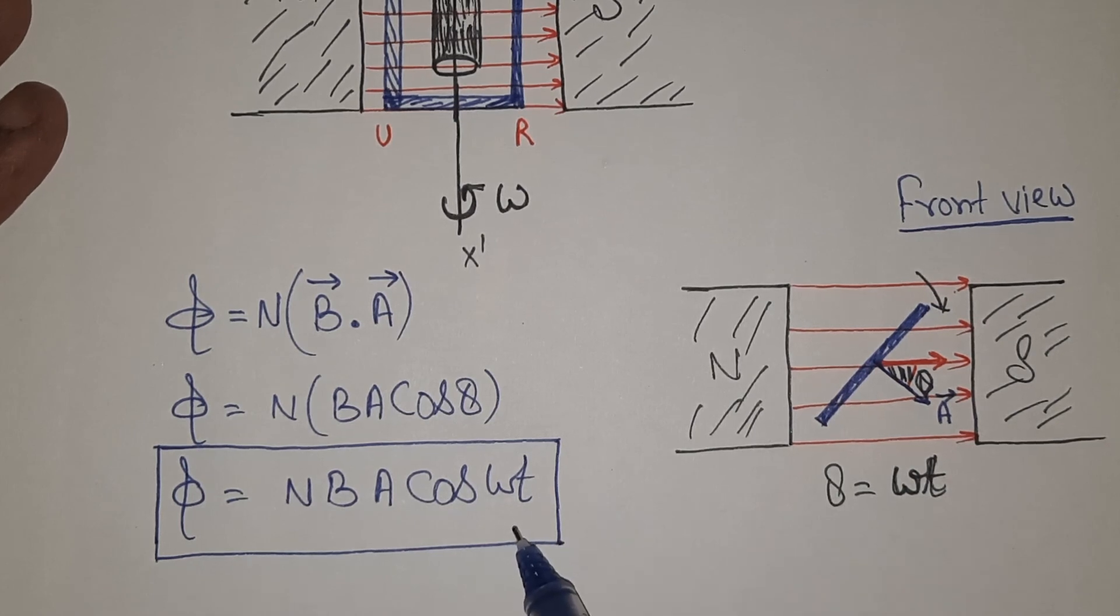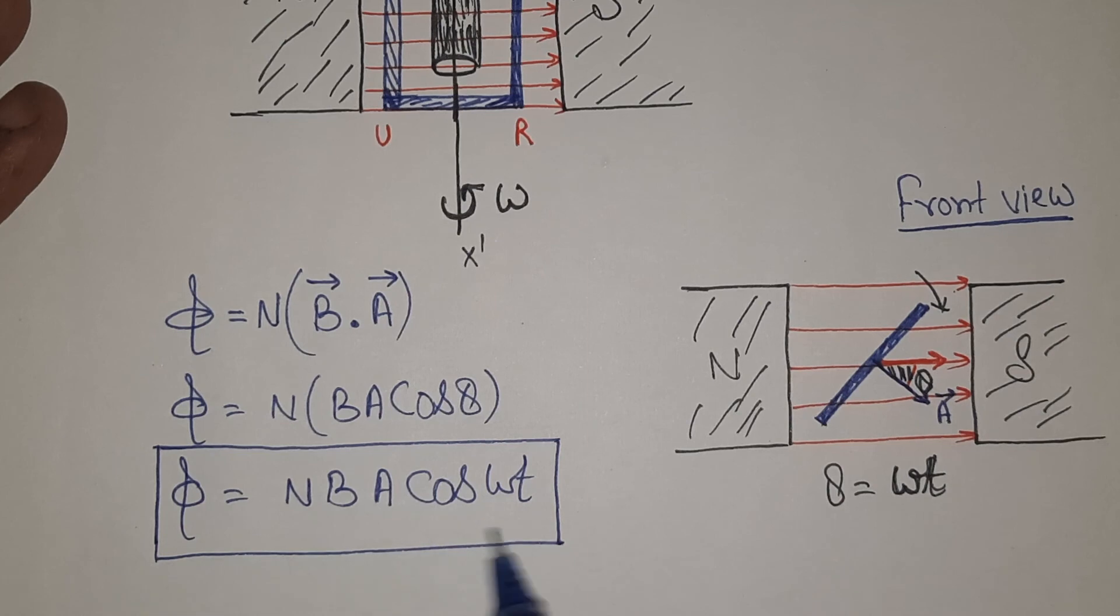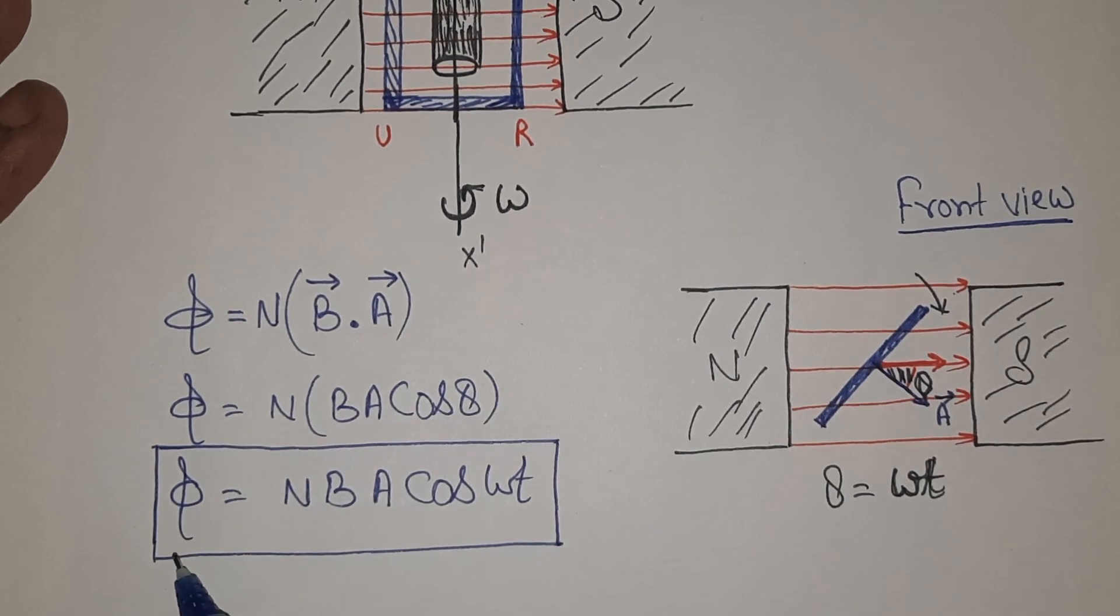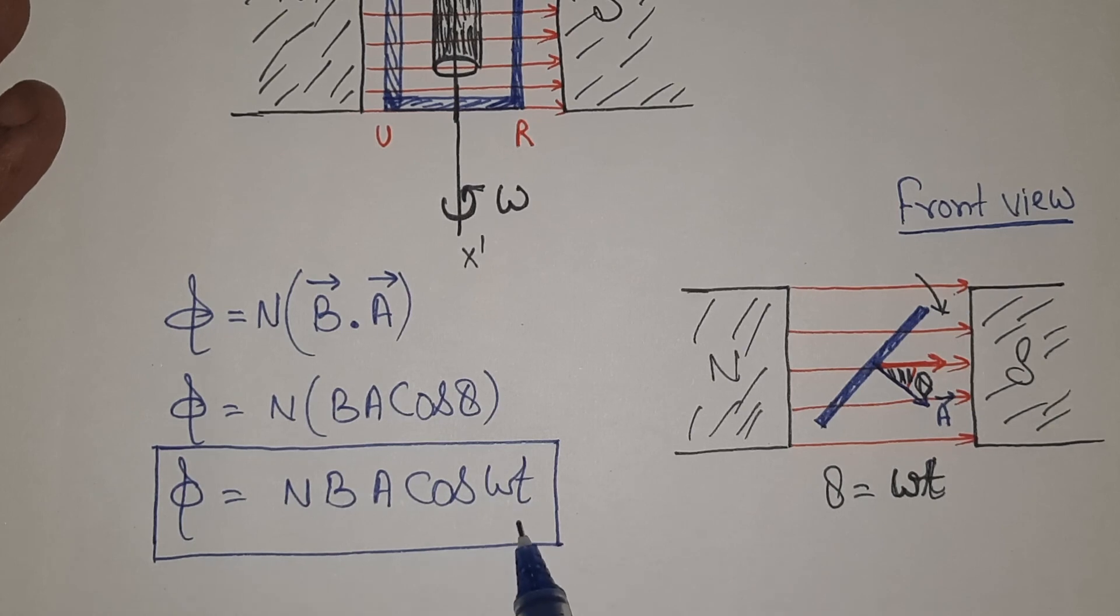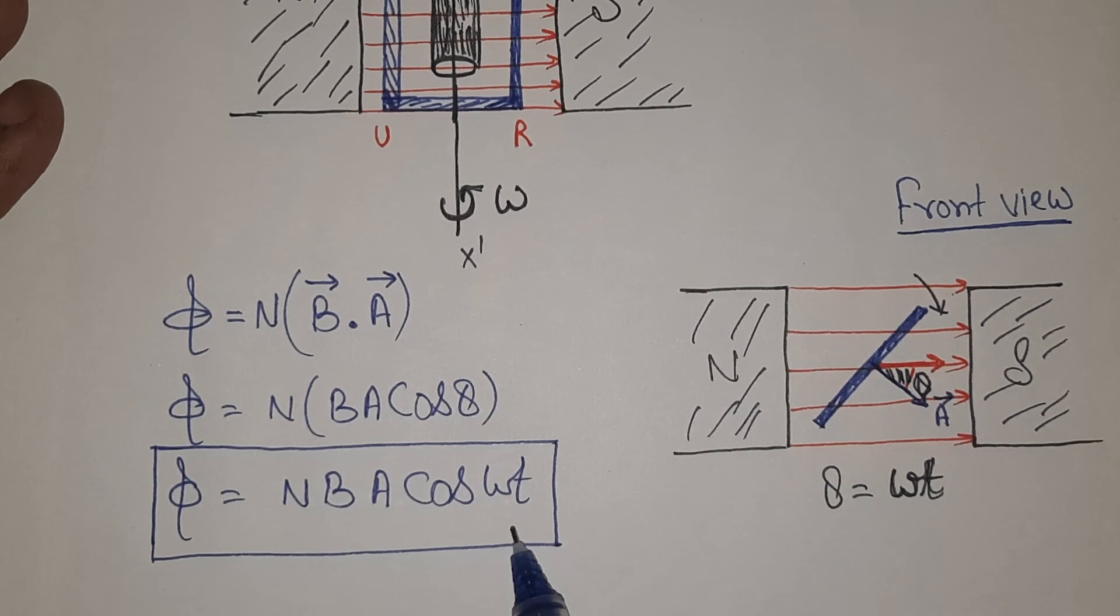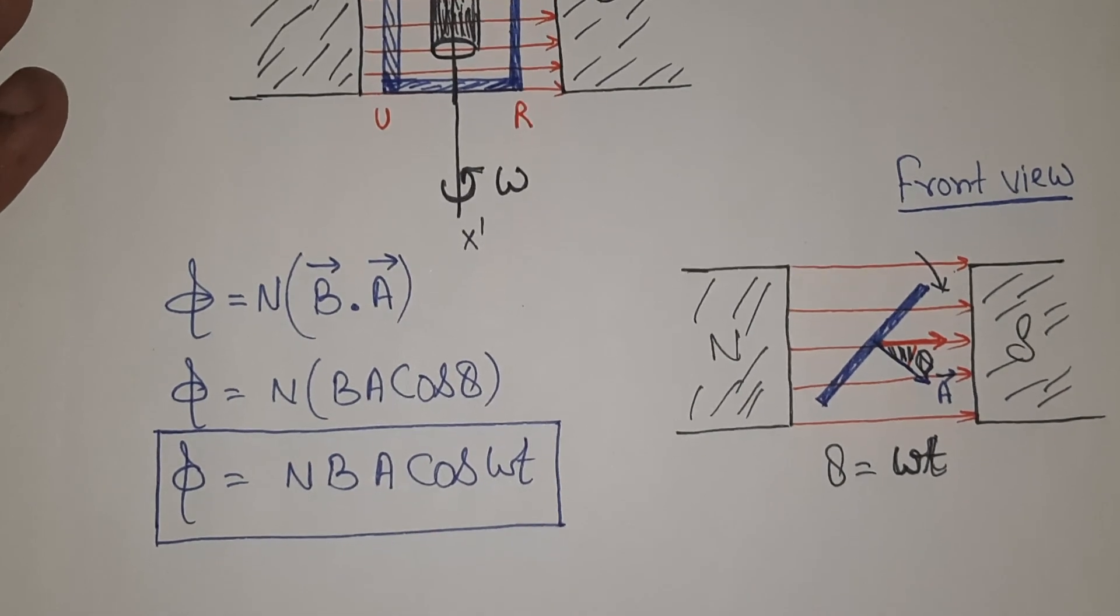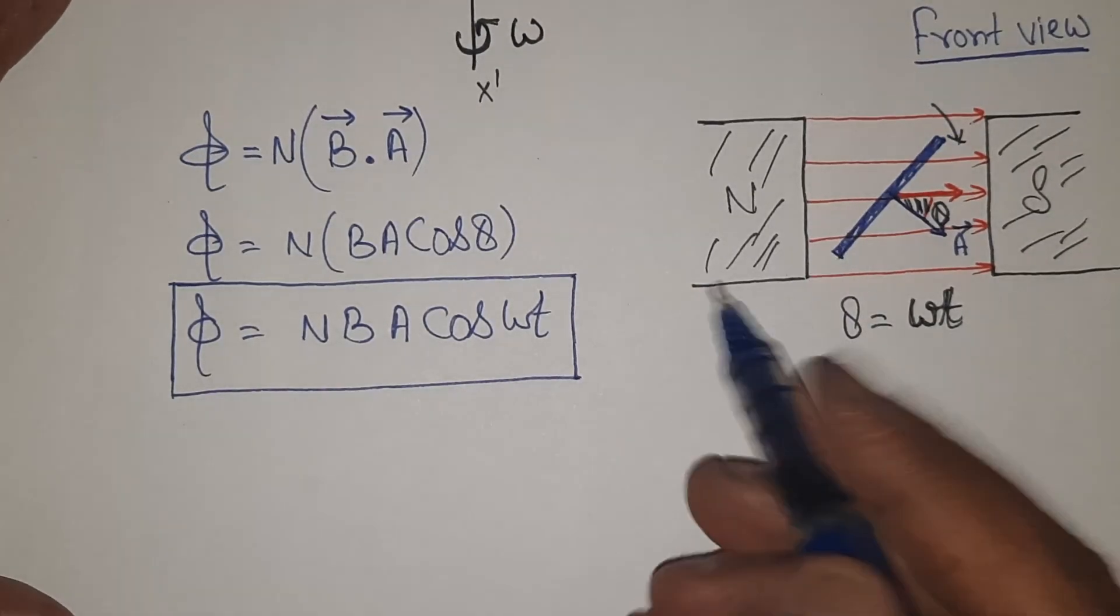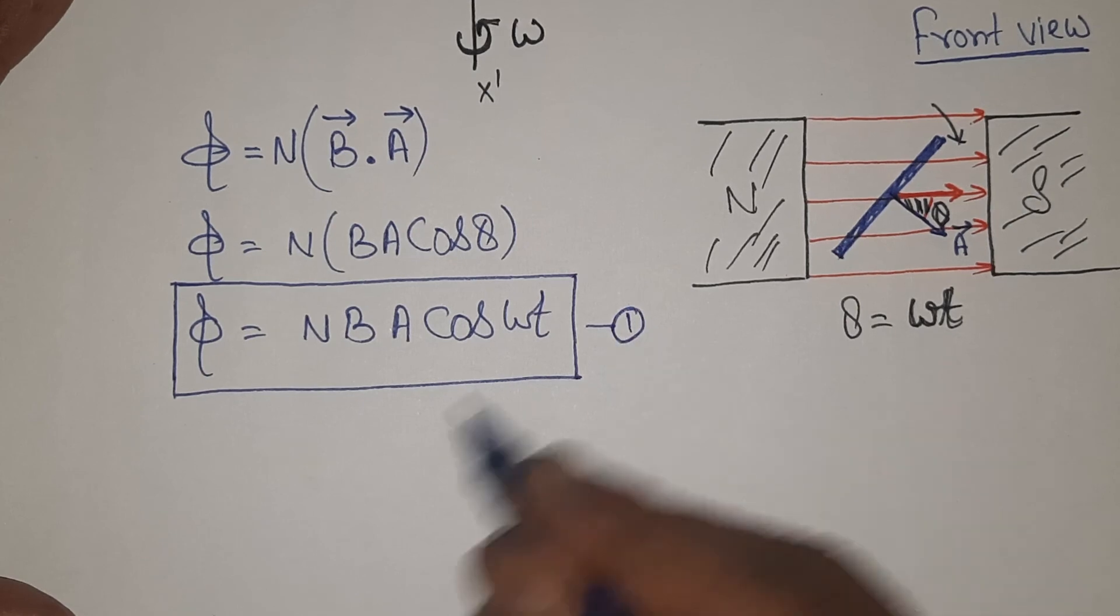As the time is progressing, the coil is rotating, the time is progressing, the flux is changing. This particular equation is providing me the total flux associated at any time, and this is providing the relation of how the time and flux both are related to each other - as the time is changing, how the flux is changing.